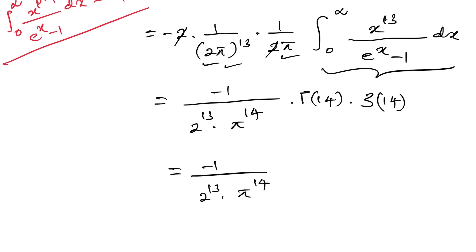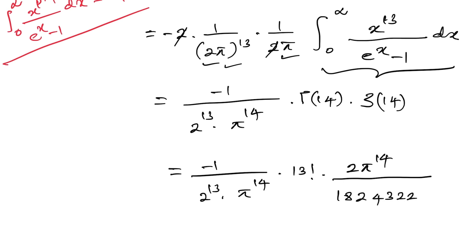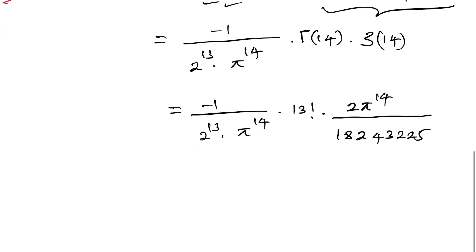Substituting Γ(14) = 13! and the known special value ζ(14) = 2π^14 / 18243225, and simplifying, everything cancels to give zeta of minus 13 equals minus 1 over 12. If you enjoyed this video, please subscribe to the channel. Thank you for watching.